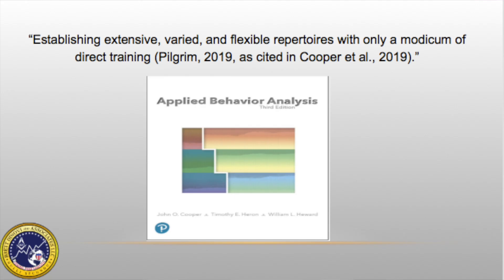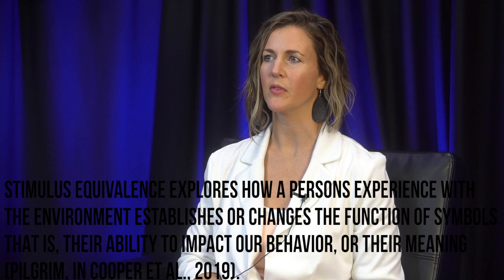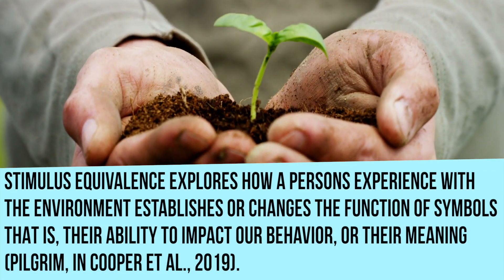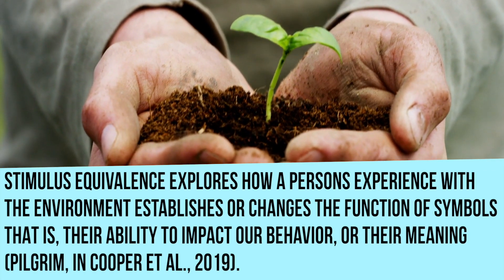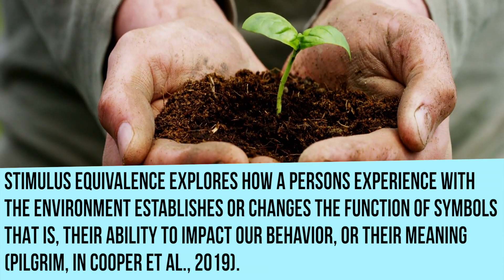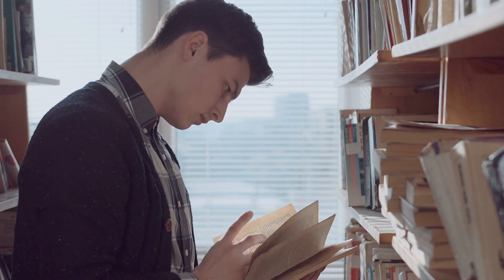But this is just a small piece of the utility of EBI. In chapter 19 of the third edition of the Cooper, Heron, and Hayward Applied Behavior Analysis textbook, Carol Pilgrim speaks of stimulus equivalence as the holy grail of applied outcomes, establishing extensive, varied, and flexible repertoires with only a modicum of direct training. Behavior analytic research on stimulus equivalence explores how a person's experience with the environment establishes or changes the function of symbols — their ability to impact our behavior or their meaning. This research helps us understand more about human behavior and how instruction can be designed and delivered to maximize learning outcomes.